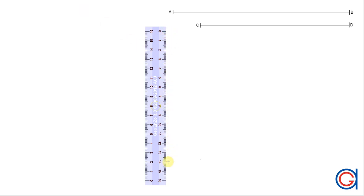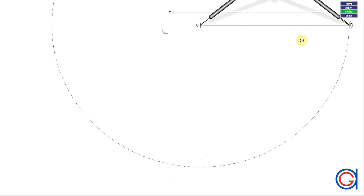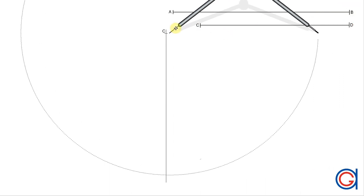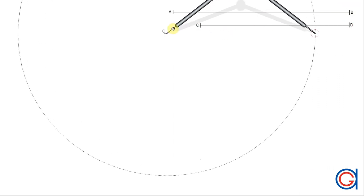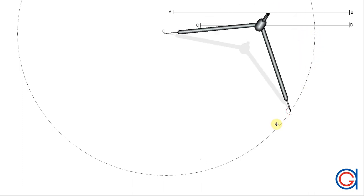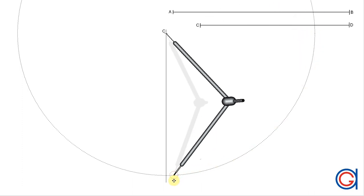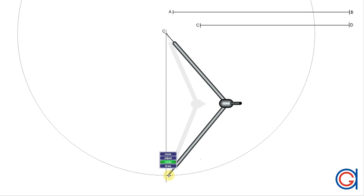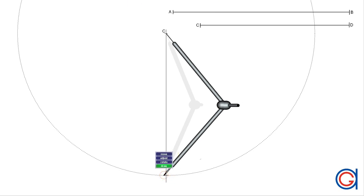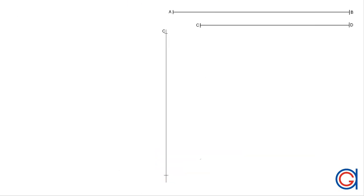The first step is to draw a vertical line in the center of the screen. Now we are going to transport the line segment CD onto our vertical line. Setting our compass to the length of the minor axis CD, we will set our compass on the previously marked point C and scribe an arc cutting our vertical line at a new point D.